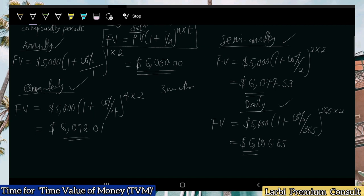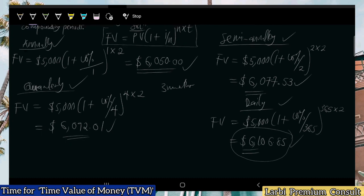The higher the compounding periods, the higher the future value of that investment; the lower the compounding periods, the lower the future value. With annual compounding we had six thousand and fifty; semi-annual gave six thousand and seventy-seven fifty-three; quarterly gave six thousand and ninety-two; and daily gave six thousand one hundred and six. Any profit-minded investor would choose the future value compounded daily.